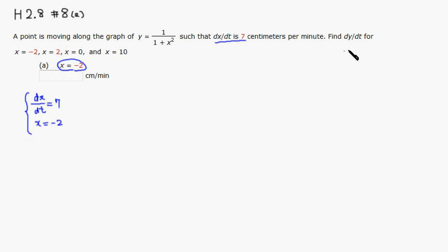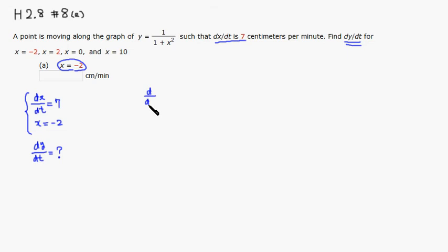We are looking for dy/dt — that's the question. To find that, we have to take the derivative of the given equation with respect to t. The derivative of the left-hand side gives dy/dt, then we take the derivative of the right-hand side with respect to t.